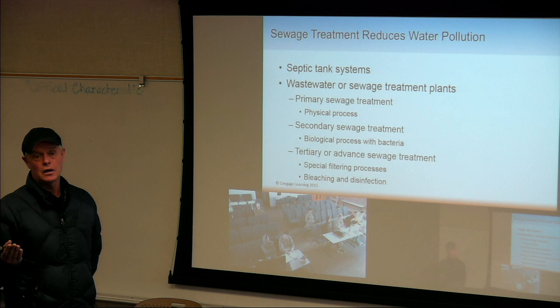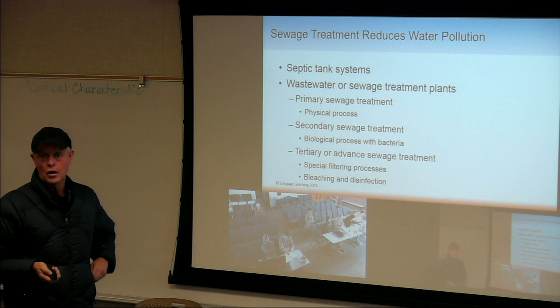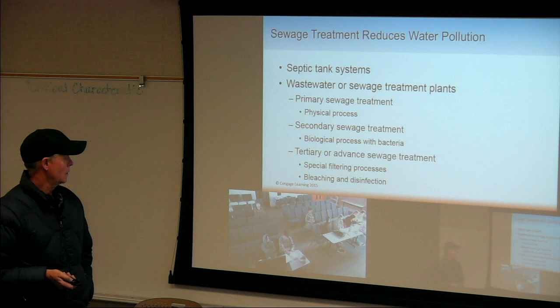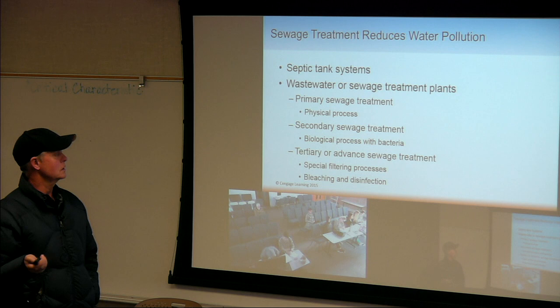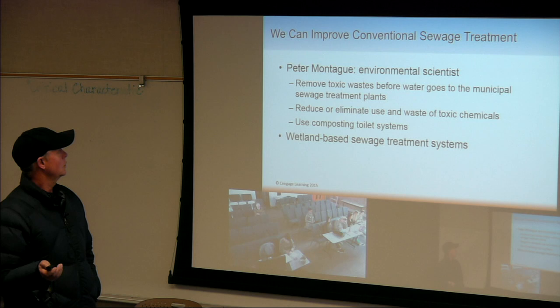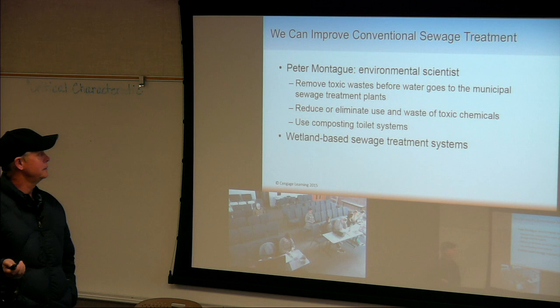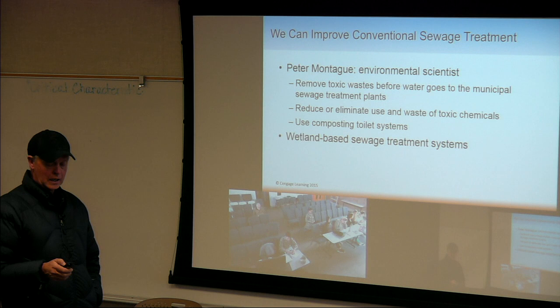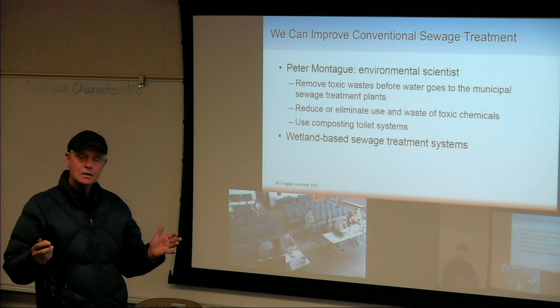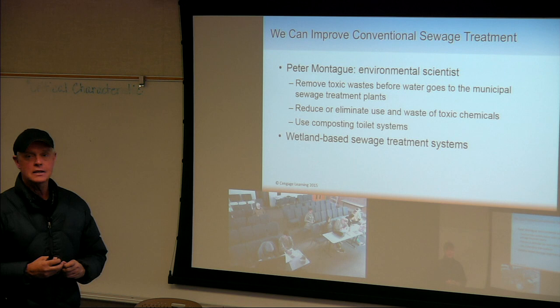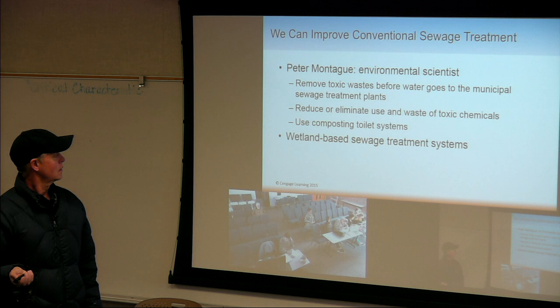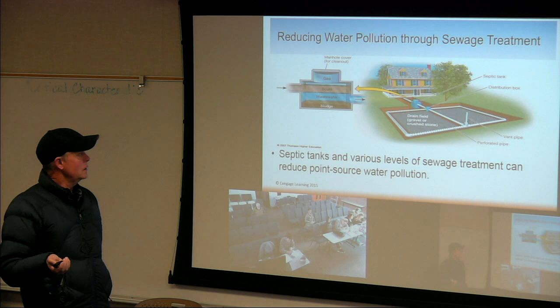Where we are, they let the treated water run straight out into the Mojave River to go on down to Barstow. Barstow gets most of their water from our sewage treatment plant — it goes down the river, into the groundwater, and down to Barstow. Can we improve conventional sewage treatment? We can do a lot — one of the biggest ways is wetland-based systems: man-made, constructed wetlands. Several dairies up here are thinking about doing these.